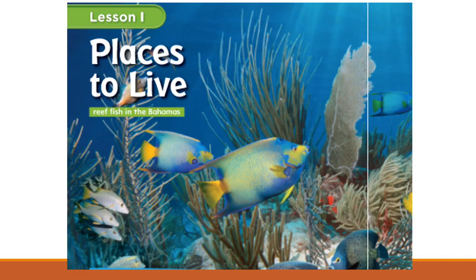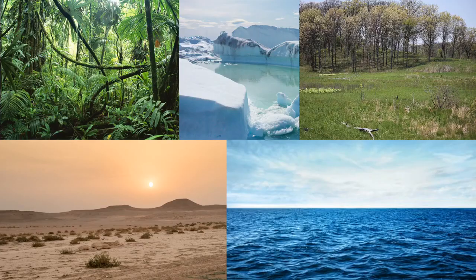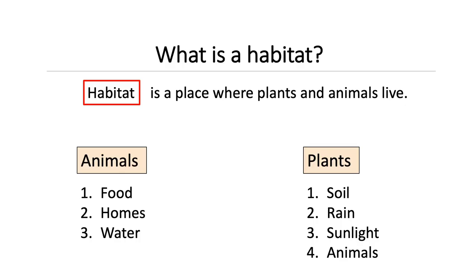Different plants and animals live in different places to get what they need. The place where a plant or an animal lives is called a habitat. Let's see what animals and plants need in their habitat.